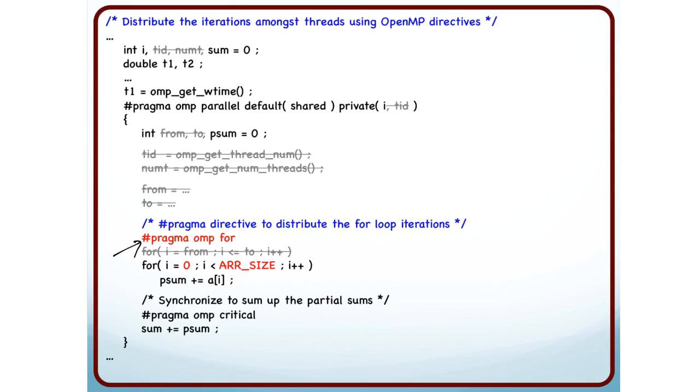And now I am not dividing up the work, this is the whole loop. For i is equal to 0, i is less than array size i plus plus, 0 to billion minus 1.